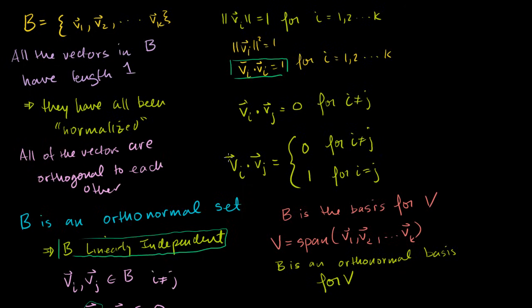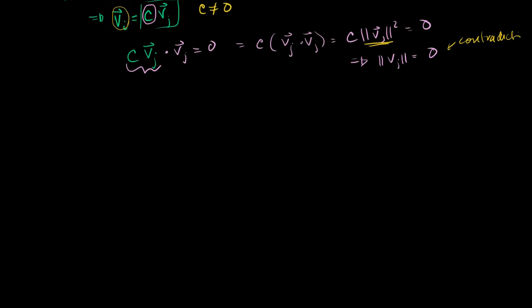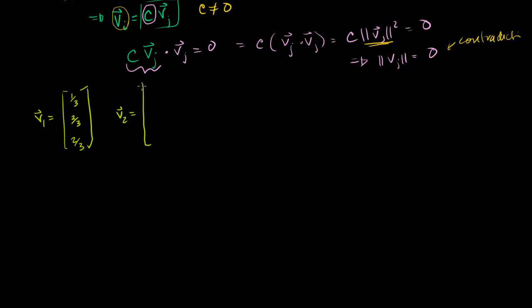Everything so far has been abstract, so let me do a quick example with real numbers to show what an orthonormal basis looks like. Say we have two vectors in R3: v1 equals (1/3, 2/3, 2/3) and v2 equals (2/3, 1/3, -2/3). And B is the set containing v1 and v2.